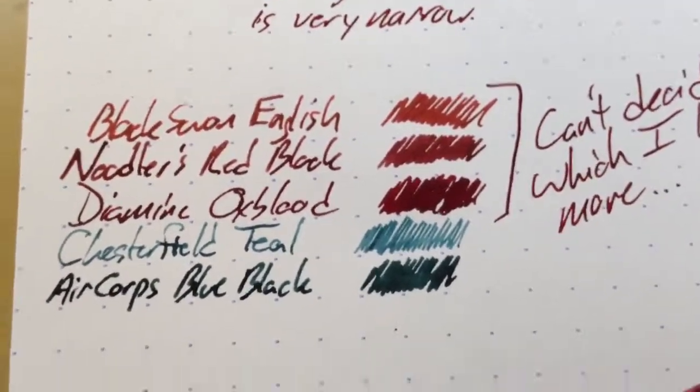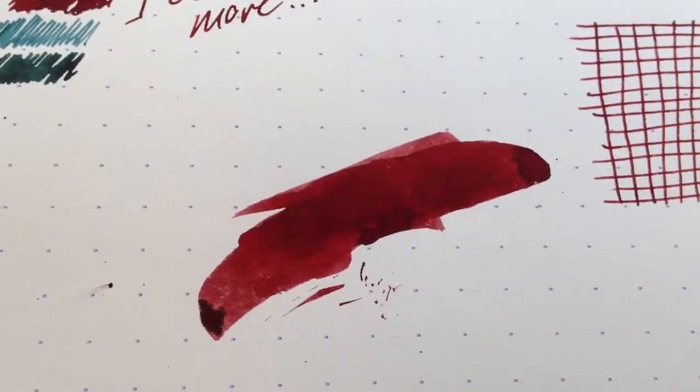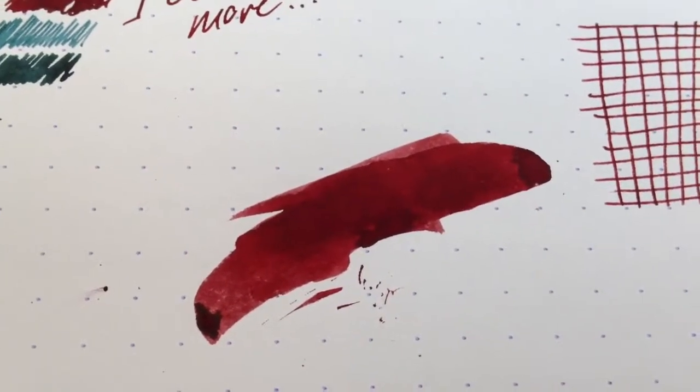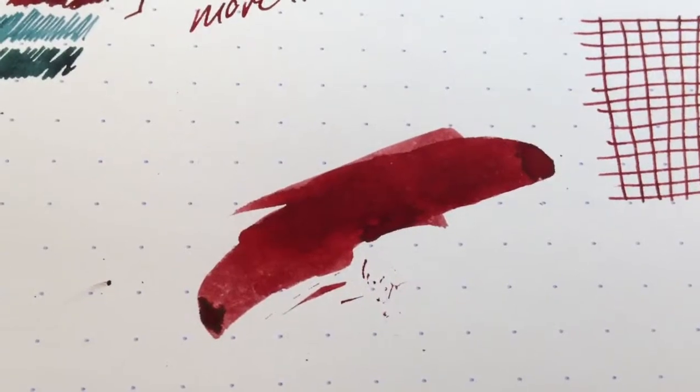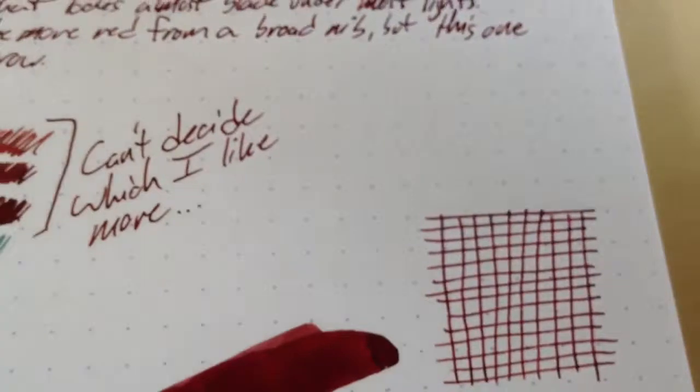But I just can't decide which one I like better out of these. I might just have to get one to grade with, since I do a lot of grading. And here it is in a smear, so seeing the gradients in that smear, I imagine that if you had a broad nib or something like that, it would look pretty stellar and much more red than it does for me.